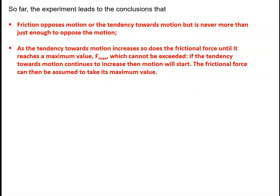Our thought experiment leads us to two conclusions. First, friction opposes motion or the tendency towards possible motion, but is never more than just enough to oppose the motion. Second, as the tendency towards motion increases, so does the frictional force until it reaches a maximum possible value, F max, which cannot be exceeded. If the tendency towards motion continues to increase, then motion will start, and we model the frictional force in this case by assuming it takes its maximum value, F max.